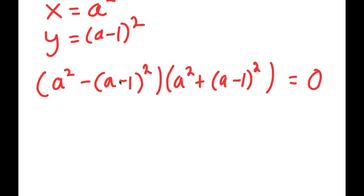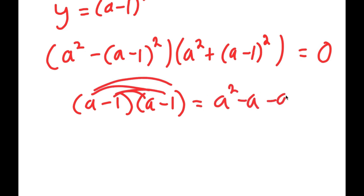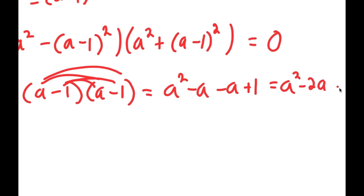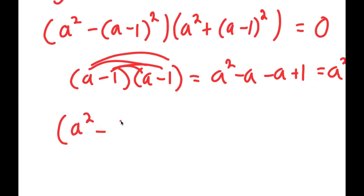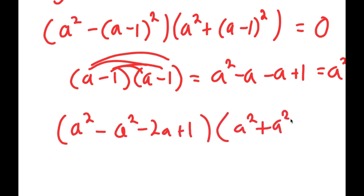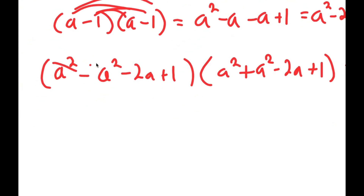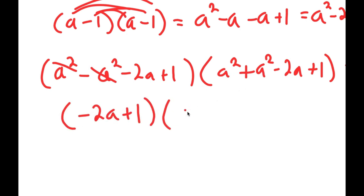Now I expand a minus 1 squared: that's a minus 1 times a minus 1, which equals a squared minus 2a plus 1. So the first factor becomes a squared minus a squared minus 2a plus 1, and the second factor becomes a squared plus a squared minus 2a plus 1. In the first factor, the a squared terms cancel, leaving negative 2a plus 1. In the second factor, a squared plus a squared gives 2a squared minus 2a plus 1. So I have negative 2a plus 1 times 2a squared minus 2a plus 1 equals 0.